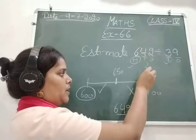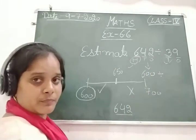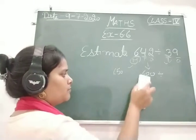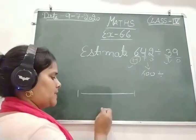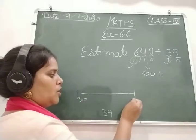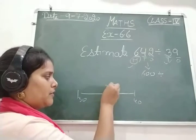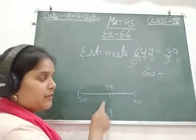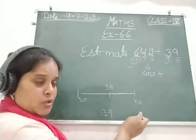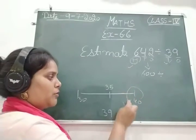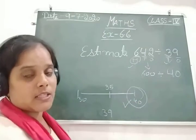So 642 will become 600. Same way, for the second number we have to round to the nearest tens. So 39 lies between which two tens? 30 and 40. The midpoint is 35. Now 39 lies between 35 and 40, so that means we will round it off to the nearest 40. This is how we do the estimation.